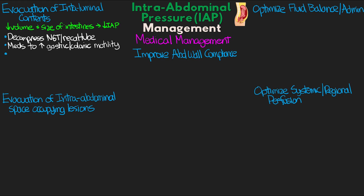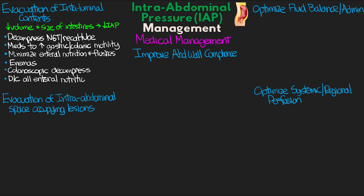From here, we'd consider minimizing enteral nutrition as well as the flushes. We'd also consider the use of enemas to further evacuate the patient. If they're still not improving or worsening, we definitely would consider a colonoscopic decompression before finally discontinuing all enteral nutrition. Per the management algorithm, if things are still not improving and we've continued to progress with an intra-abdominal pressure greater than 20 with new organ dysfunction, then surgical decompression is that next step, and that's going to be the same case for each of these arms.